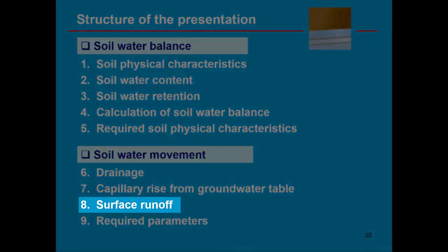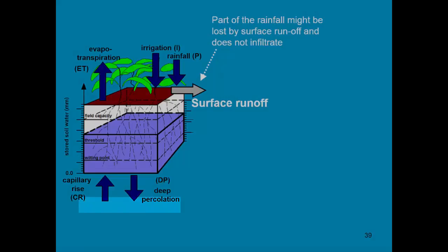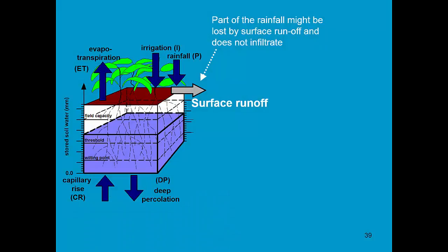Let us finally focus on surface runoff. Part of the rainfall might be lost by surface runoff and does not infiltrate. To simulate surface runoff, AquaCrop considers a curve number and a wetness of the topsoil. The curve number is derived from the saturated hydraulic conductivity. There are also field management practices which will affect surface runoff and they will be discussed in the training module for field management.